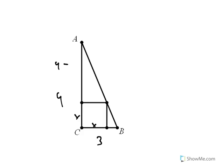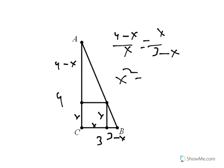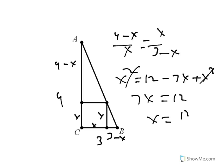In modern day, we would do this with similar triangles. And we'd say 4 minus x over x is this larger triangle, and the smaller triangle is x over 3 minus x. And we'd cross multiply. Because we'd cancel that, we'd get 7x equals 12, or x equals 12 over 7.